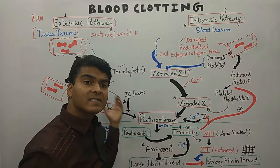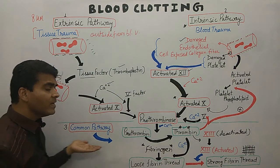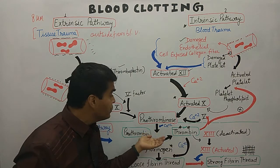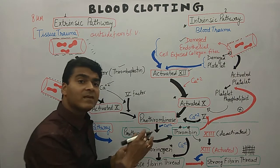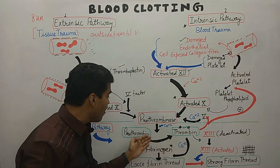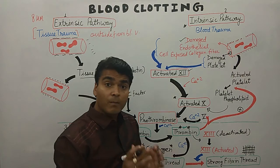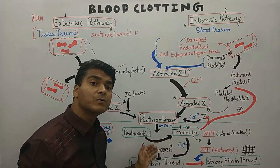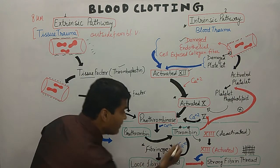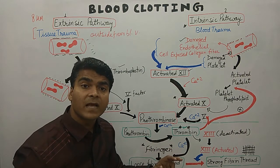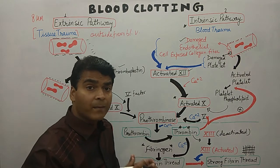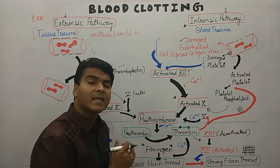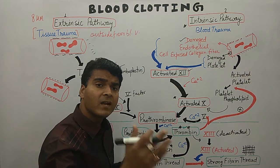The first step is completed from both extrinsic and intrinsic pathways — we now have prothrombinase. Moving to the common pathway: prothrombinase, in the presence of calcium, converts prothrombin into thrombin. Now we have thrombin, which has a lot of work to do. The first work of thrombin is to convert fibrinogen into loose fibrin thread in the presence of calcium. But we need a strong thread.